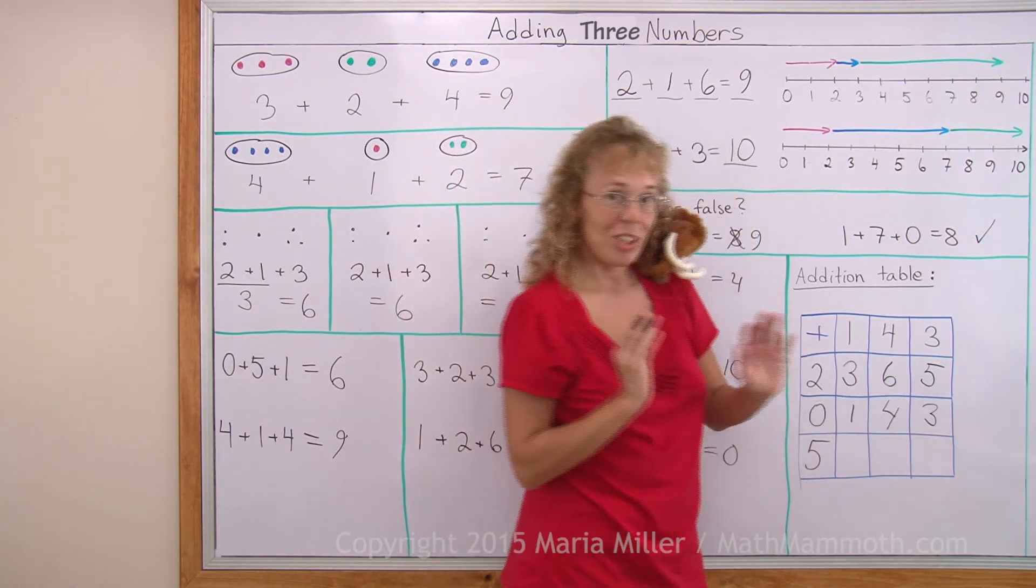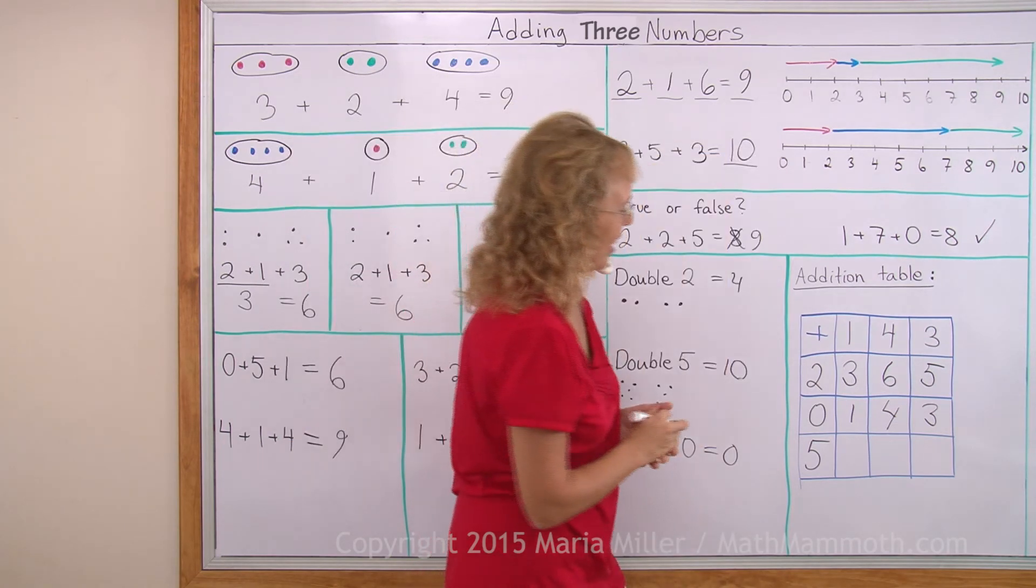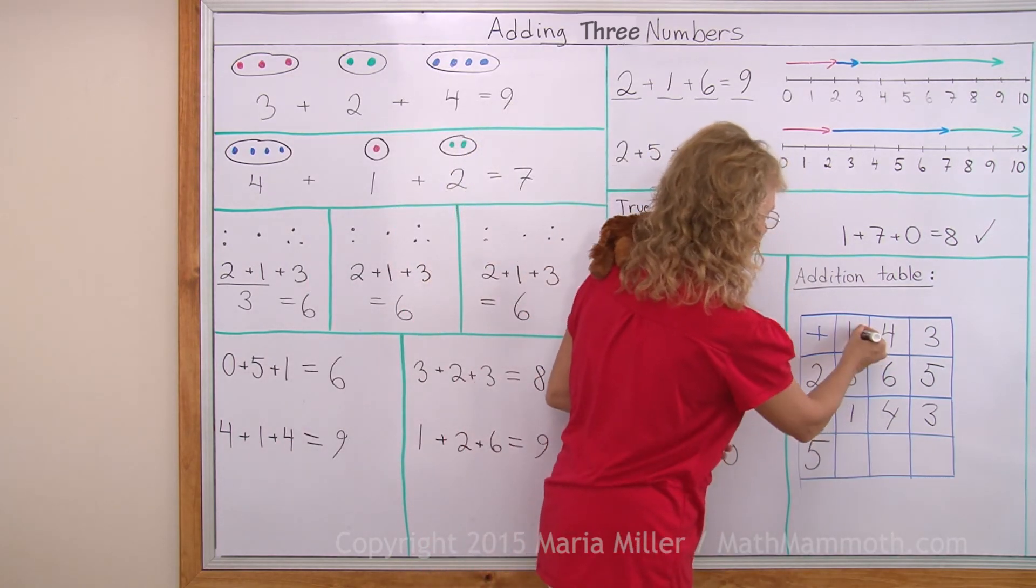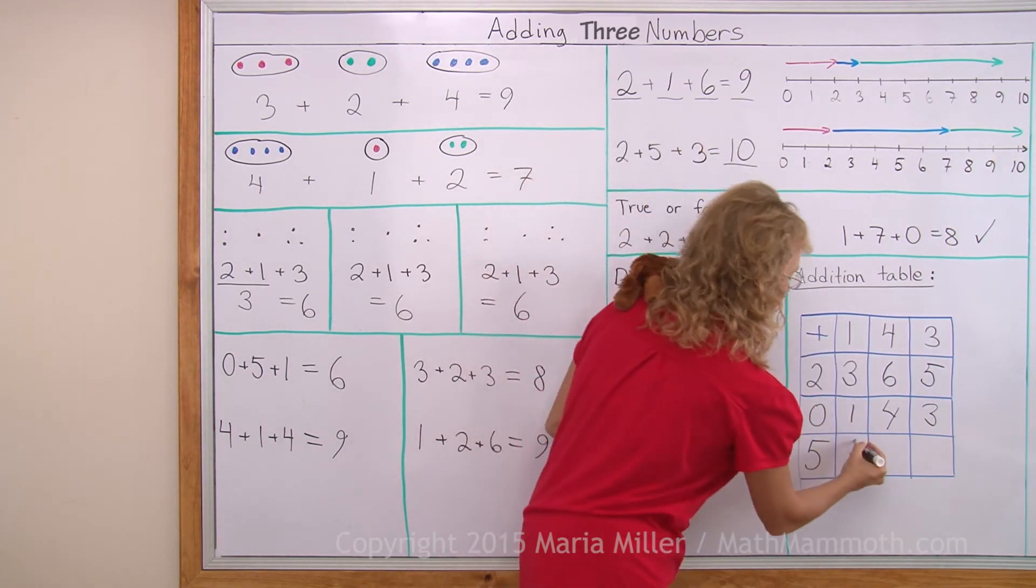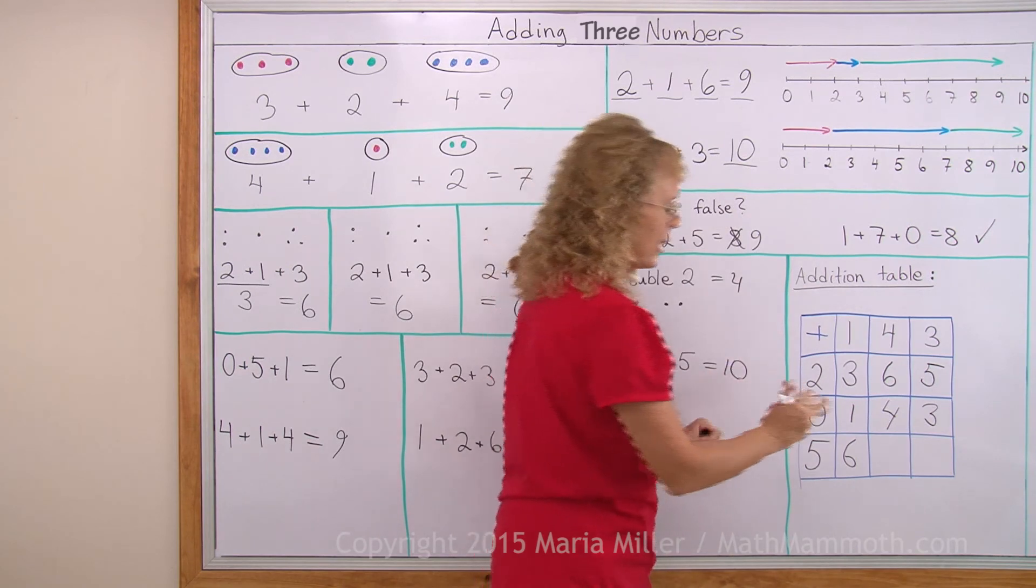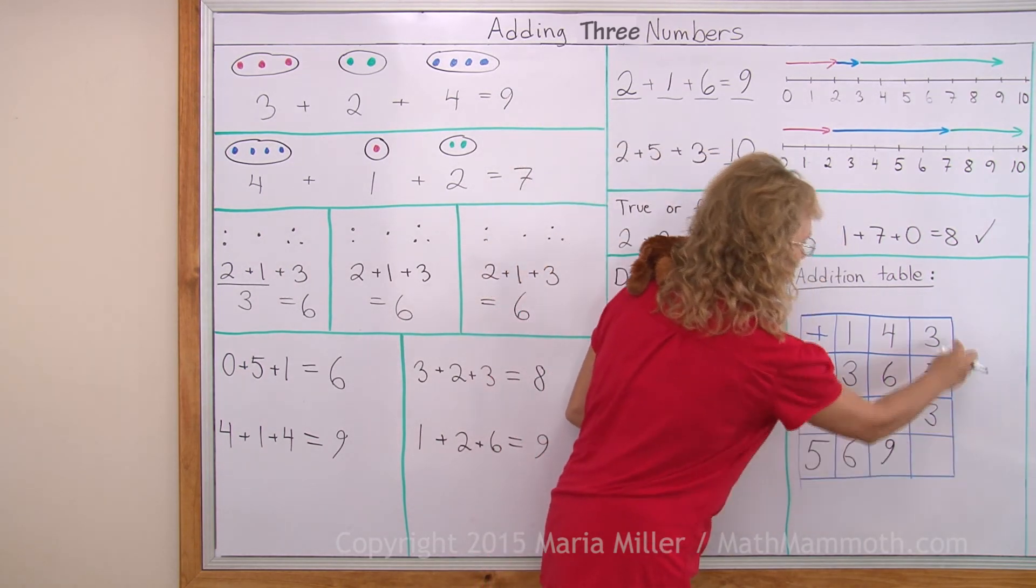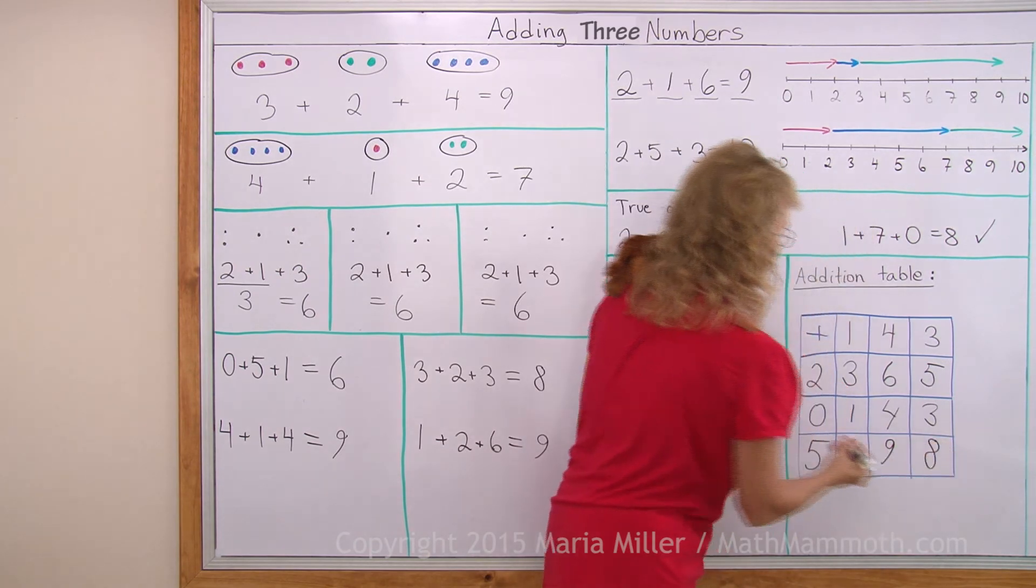Try to solve these last three on your own. Pause the video for a little bit. Here we have one up there, five to the left. Five plus one, six. Over here, four and five, that makes nine. And then lastly, three and five, that makes eight.